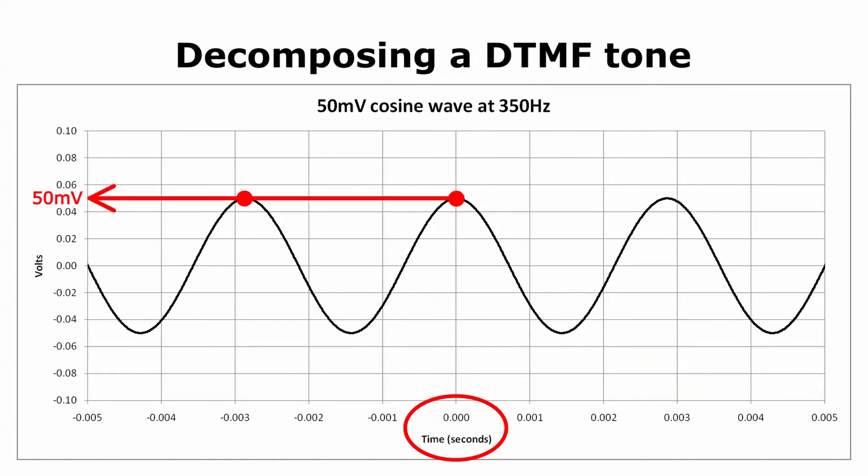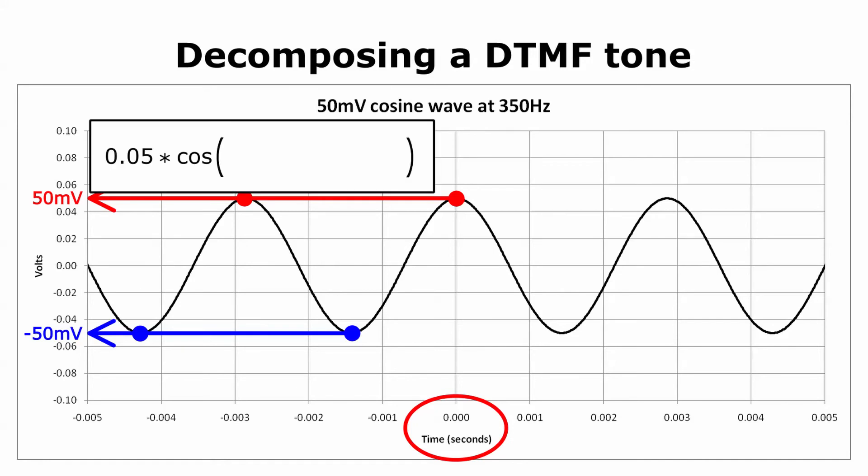The vertical axis is the voltage. The cosine has a peak voltage of 0.05 volts, or 50 millivolts. Its peak negative voltage is minus 0.05 volts, or minus 50 millivolts. The equation for this curve will have this form. 0.05 multiplied by the cosine of something. As the cosine term alternates between minus 1 and plus 1, it will be multiplied by 0.05 to produce a result that varies between minus 50 millivolts and plus 50 millivolts. That takes care of the amplitude.